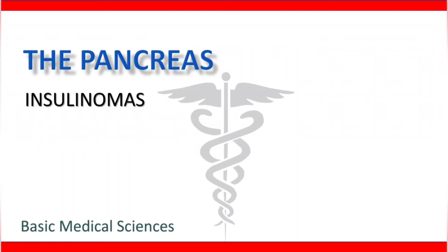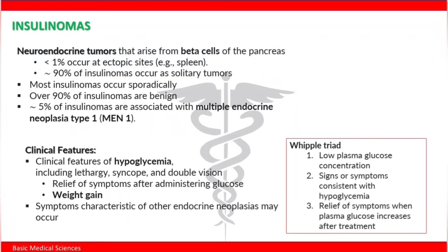Welcome. In this video we are going to talk about insulinomas. Insulinomas are neuroendocrine tumors that arise from beta cells of the pancreas. Less than one percent of insulinomas occur at ectopic sites, for example the spleen. Approximately 90 percent of insulinomas occur as solitary tumors, most of them occur sporadically, and over 90 percent of them are benign. Approximately five percent of insulinomas are associated with multiple endocrine neoplasia type one.